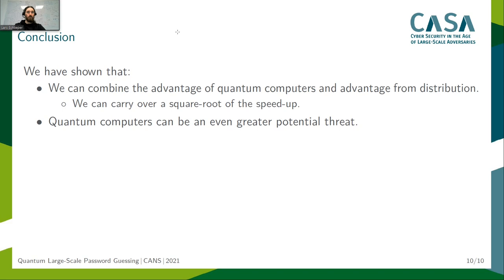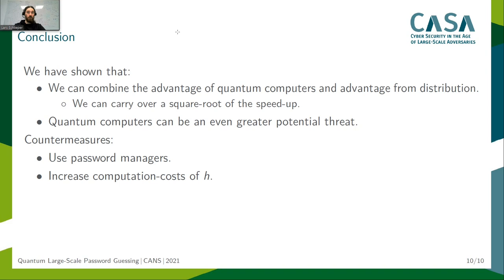To summarize: we have shown in this paper that we can combine the advantage of a quantum computer with the advantage of knowledge about the password distribution. More precisely, we can carry over a square root of the speed-up from the password distribution to the quantum setting, meaning quantum computers could be an even greater threat to passwords in the future. However, we can prepare for this — for example, by using password managers more often, which allows passwords to be longer and uniformly distributed, eliminating the advantage from password distribution. On the server side, we could use costly-to-compute hash functions, so that the time until quantum computers are powerful enough to evaluate them is delayed. With this in mind, the threat of quantum computers may be manageable if we prepare, and we could still use passwords in the future.